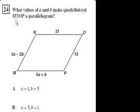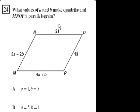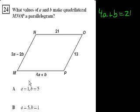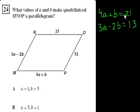What values of A and B make the quadrilateral MNOP a parallelogram? For this to be a parallelogram, the opposite sides have to be equal. If opposite sides are going to be equal, that means 4A plus B is equal to 21, because they're opposite sides. Similarly, 3A minus 2B should be equal to 13, because they're opposite sides. So we have two linear equations with two unknowns — it's really an Algebra 1 problem in disguise.